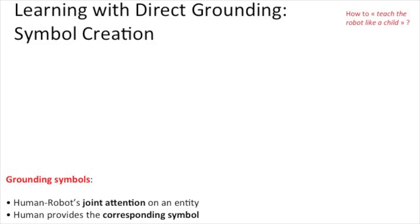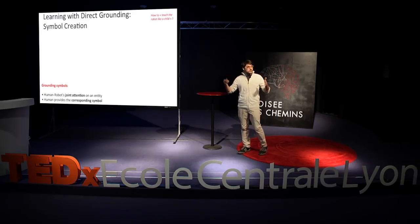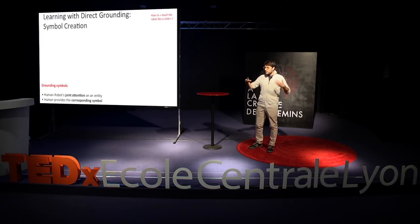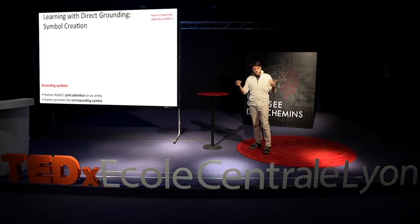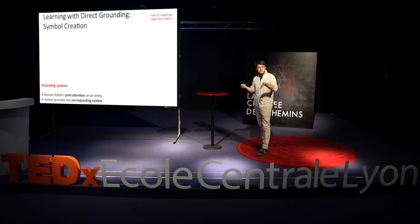Now that we have grammatical construction, we still need to find the symbol behind it. What is a toy? What is a box? What is left? We need to create these symbols — that's called grounding symbols. In order to do that, both human and robot engage in joint attention: they both focus on a specific concept or entity in the world, and then the human provides the corresponding symbol — the name of the object, for instance.